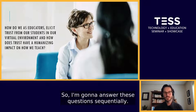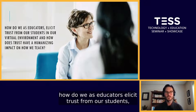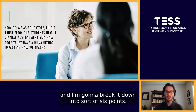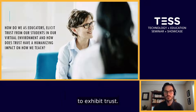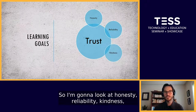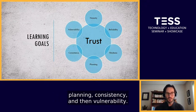I'm going to answer these questions sequentially. First: how do we as educators elicit trust from our students? I'm going to break it down into six points, looking at how we as leaders of the classroom exhibit trust: honesty, reliability, kindness, planning, consistency, and then vulnerability — which can also be looked at as a kind of openness.